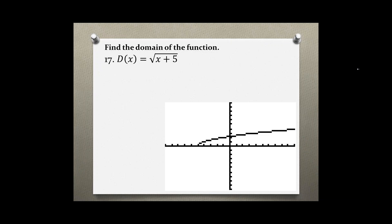To find the point where the radical function starts, take the expression under the radical and set it greater than or equal to zero. So x + 5 ≥ 0.